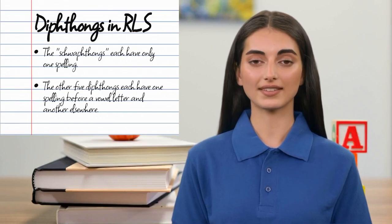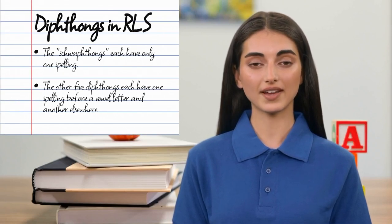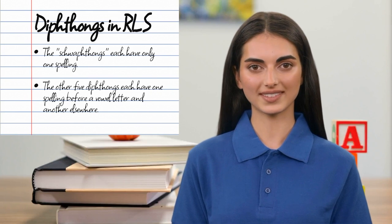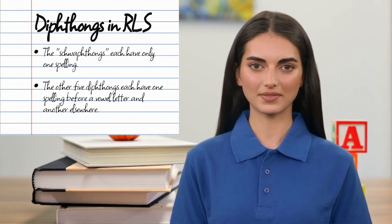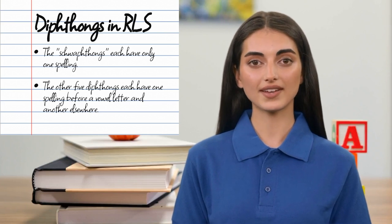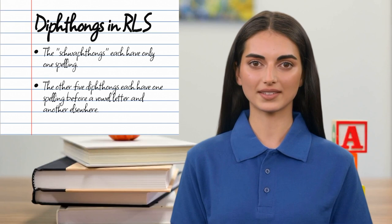There are eight diphthongs in English altogether. Three of them, which we're calling schwa-thongs, contain schwa and have only one spelling in RLS. The remaining five each have two RLS spellings, one to be used before a vowel letter and another to be used elsewhere.